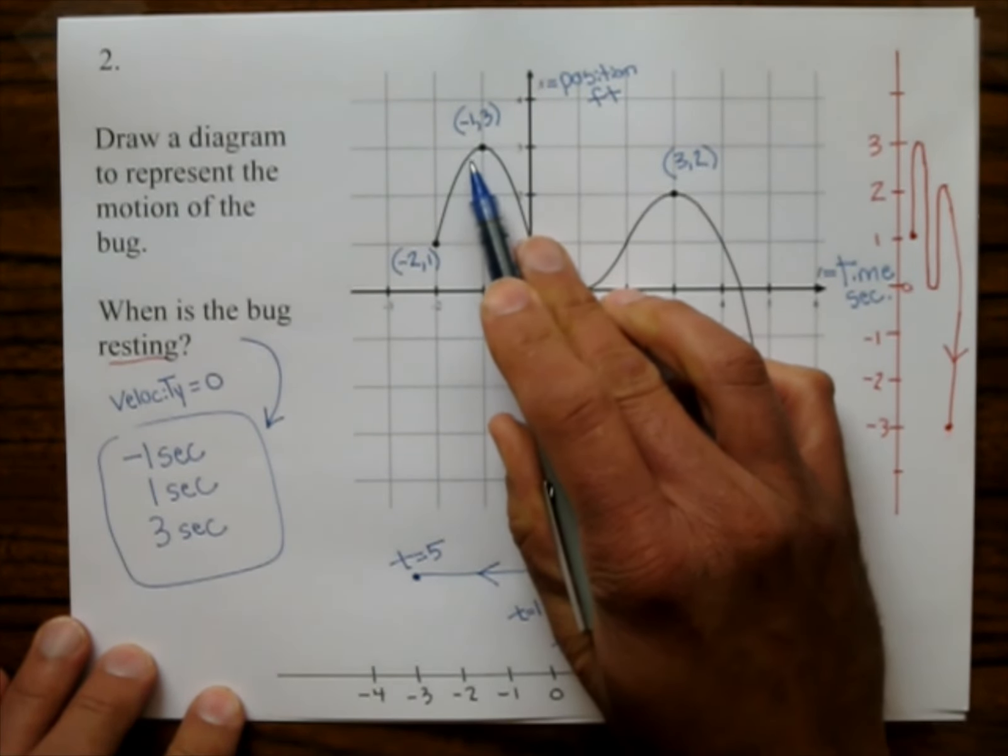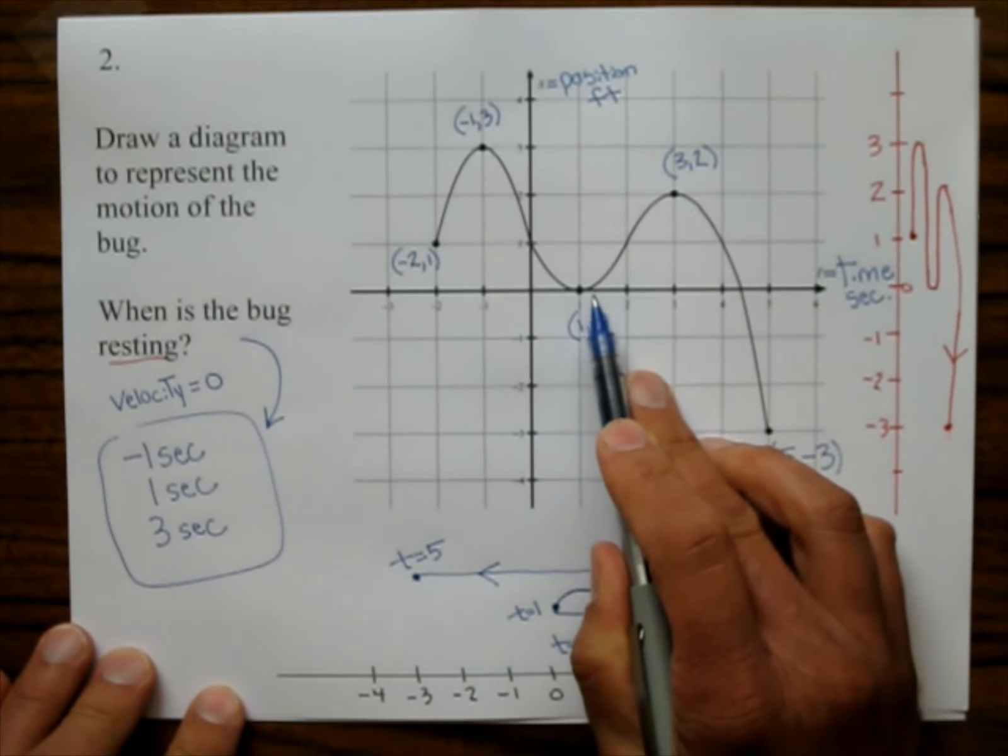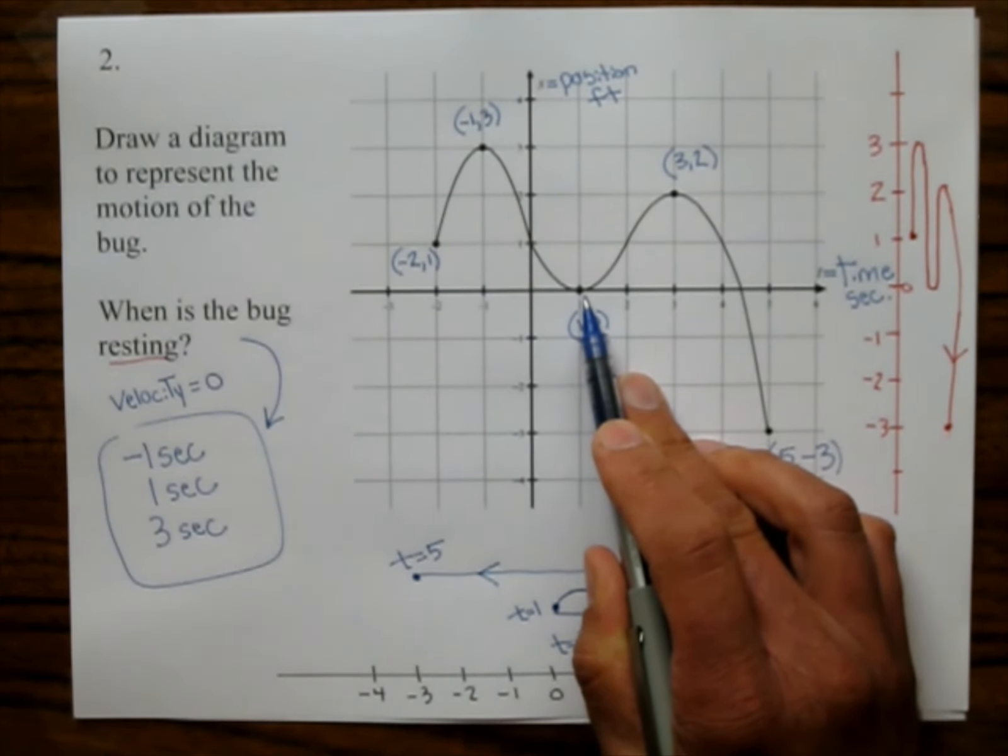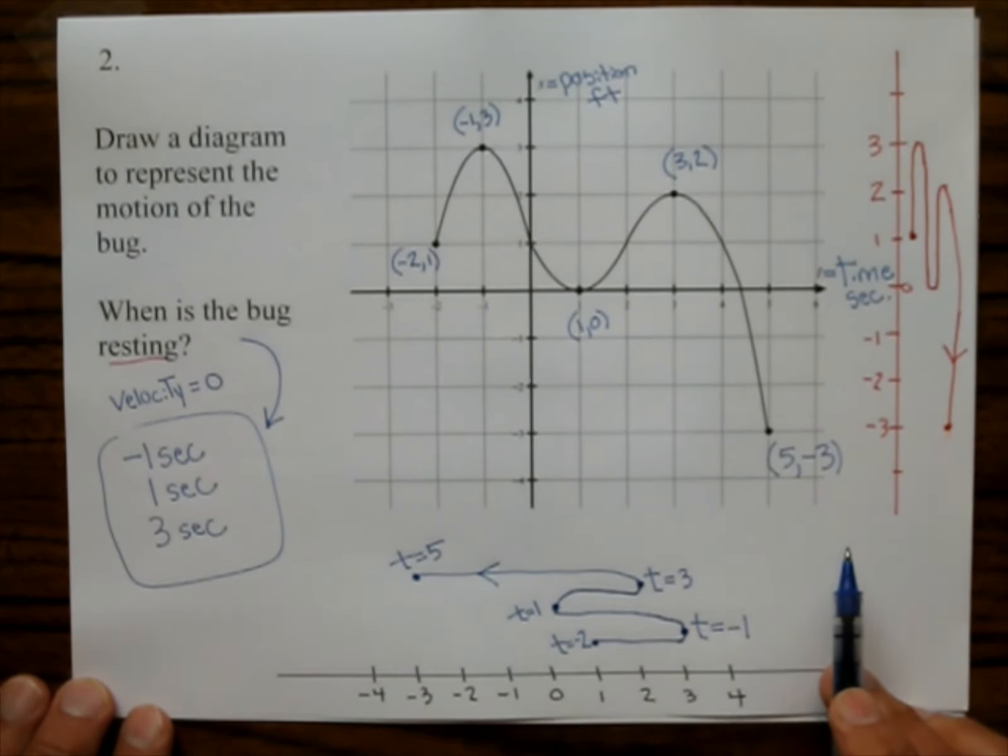That's when the bug is resting. Now if you look at this graph here. That looks like the tops of hills and the bottoms of valleys. Those are called local mins and local maxes. Or local maxes and local mins. And so those are the resting times. So in your homework on bug one.